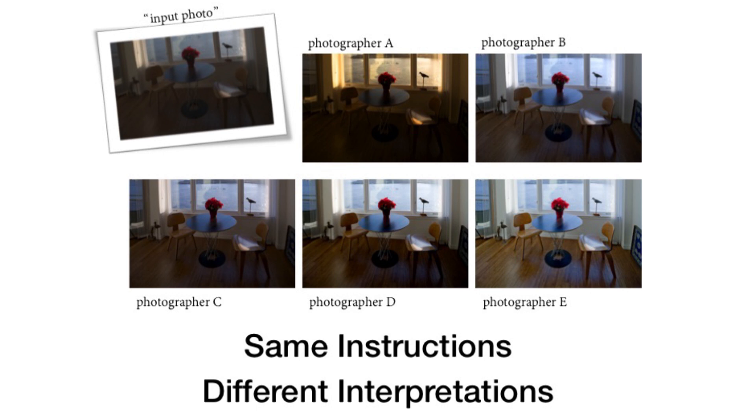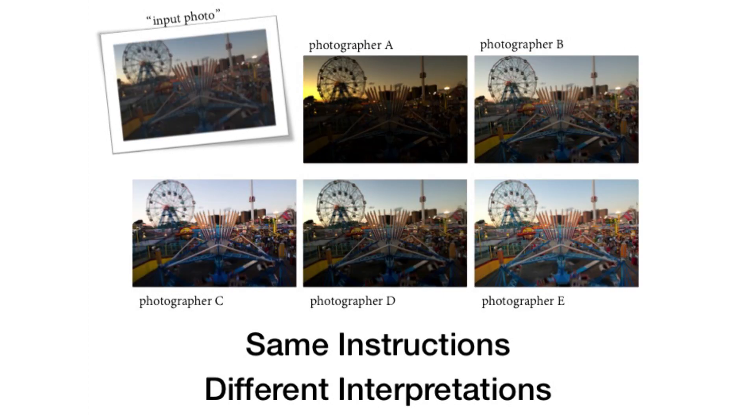For instance, photographer A likes dark pictures and photographer E likes bright pictures — and they always have the same kind of subjective bias. So maybe there are a lot of different interpretations of a single picture, but one photographer has the same personal interpretation consistently. So we set our goal not to reproduce what every photographer does, but we chose one and tried our best to reproduce what that one photographer did.